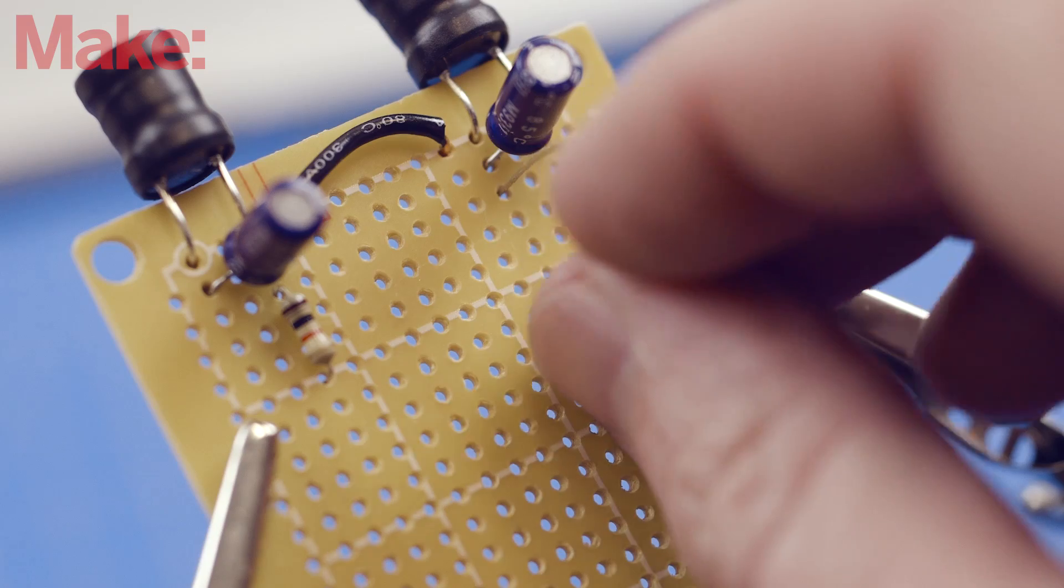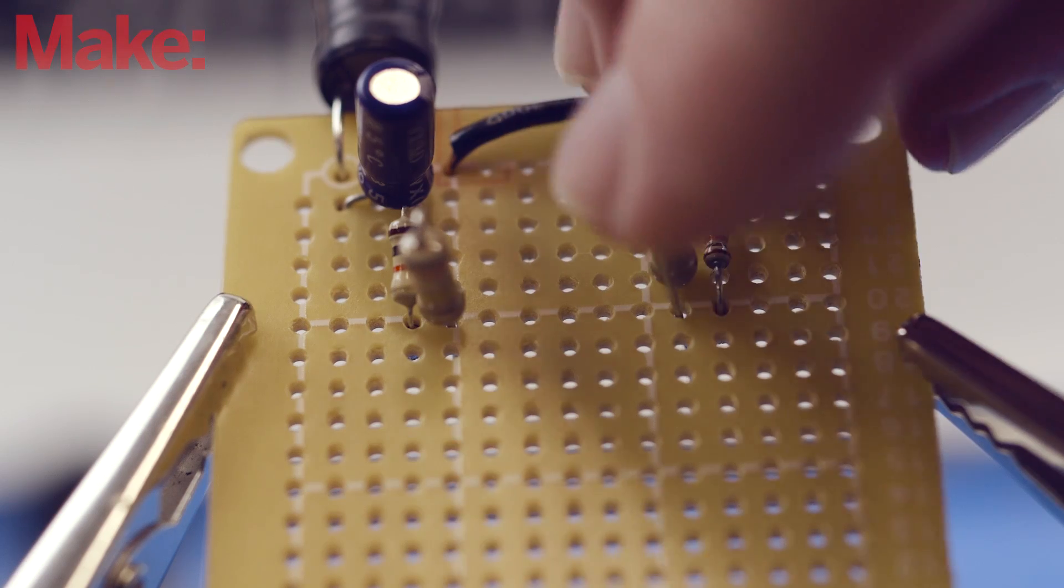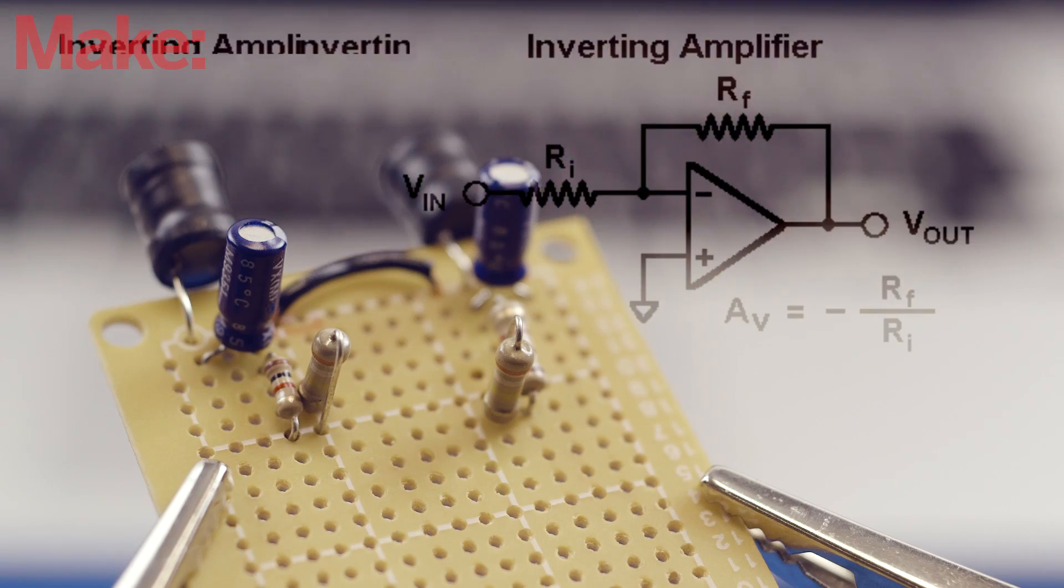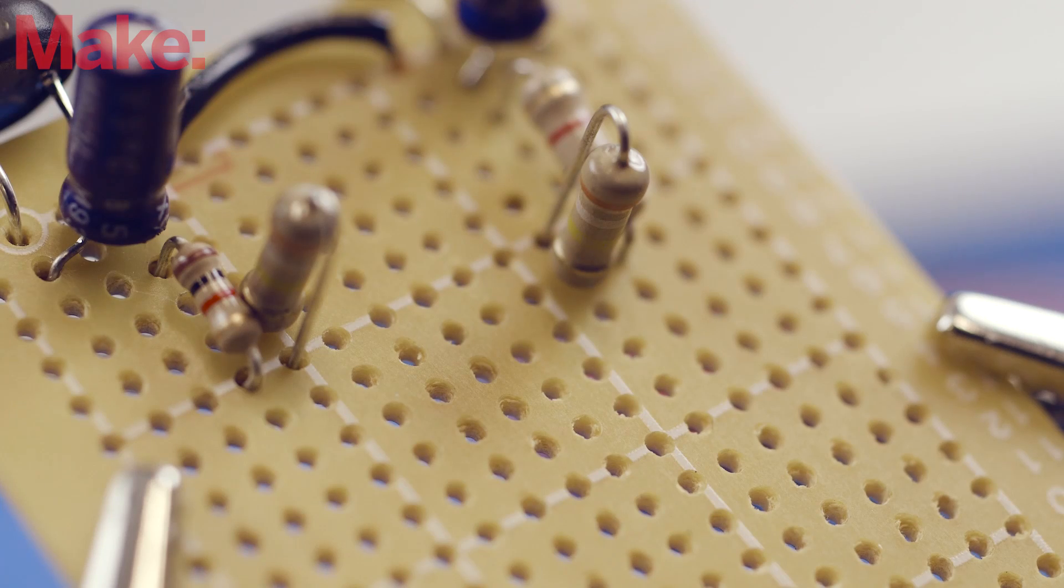Add the 1kohm and 390kohm resistors to the circuit as shown. In this configuration, they function as an inverting amplifier. Note that the 390kohm resistors are placed in the standing up position.